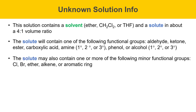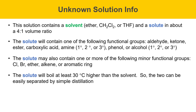The solute may also contain one or more minor functional groups: a chlorine, a bromine, an ether, an alkene, or an aromatic ring. The solute will boil at least 30 degrees higher than the solvent, so it'll be possible to easily separate the two using a simple distillation. The solvent will distill first, and the solute will be left behind as a residue. Your solute may be a solid or liquid.